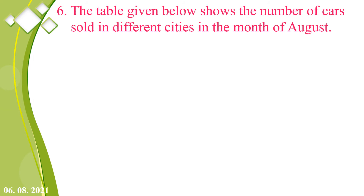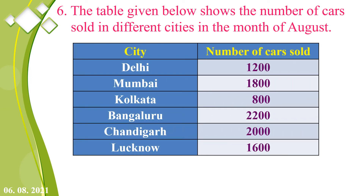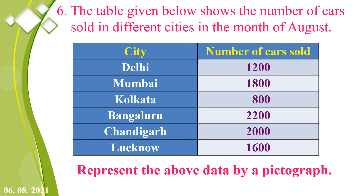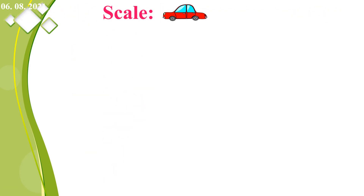Problem 6: the table below shows the number of cars sold in different cities in August. Delhi: 1,200. Mumbai: 1,800. Kolkata: 800. Bangalore: 2,200. Chandigarh: 2,000. Lucknow: 1,600. Represent the above data by a picture graph. We take the scale: 1 picture equals 400 cars.